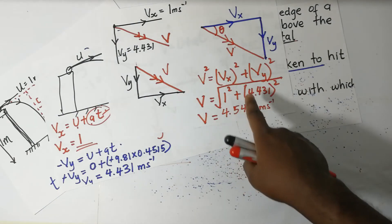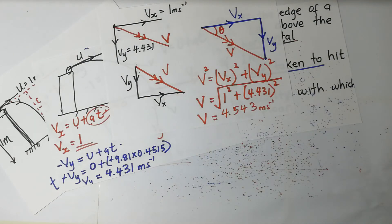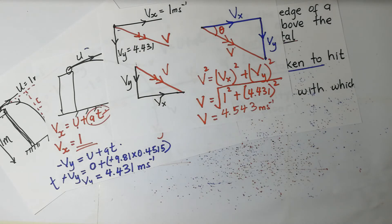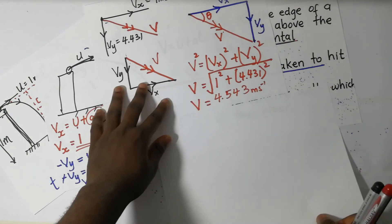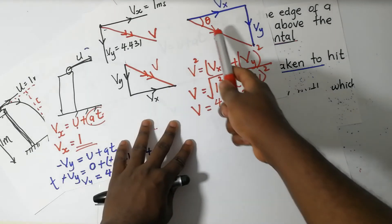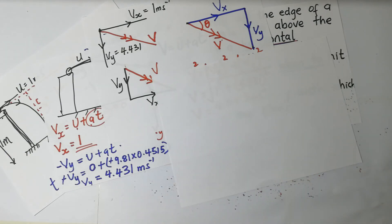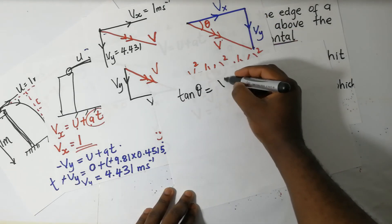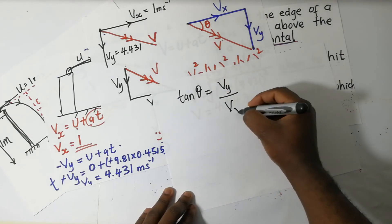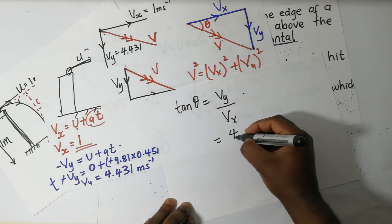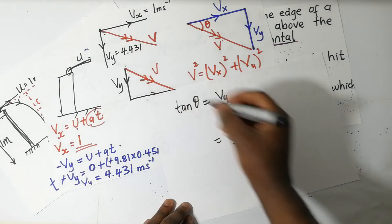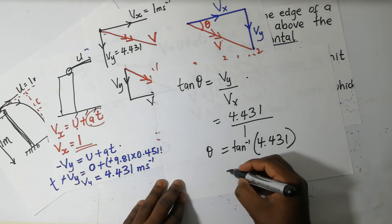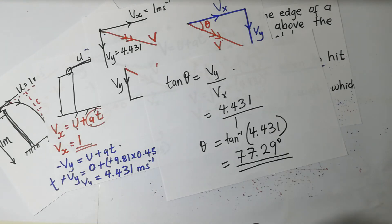To find the direction, we use trigonometry. Tan of theta equals the opposite which is vy, divided by the adjacent which is vx. So tan theta equals 4.431 divided by 1. Therefore theta equals tan inverse of 4.431, which gives us 77.29 degrees.